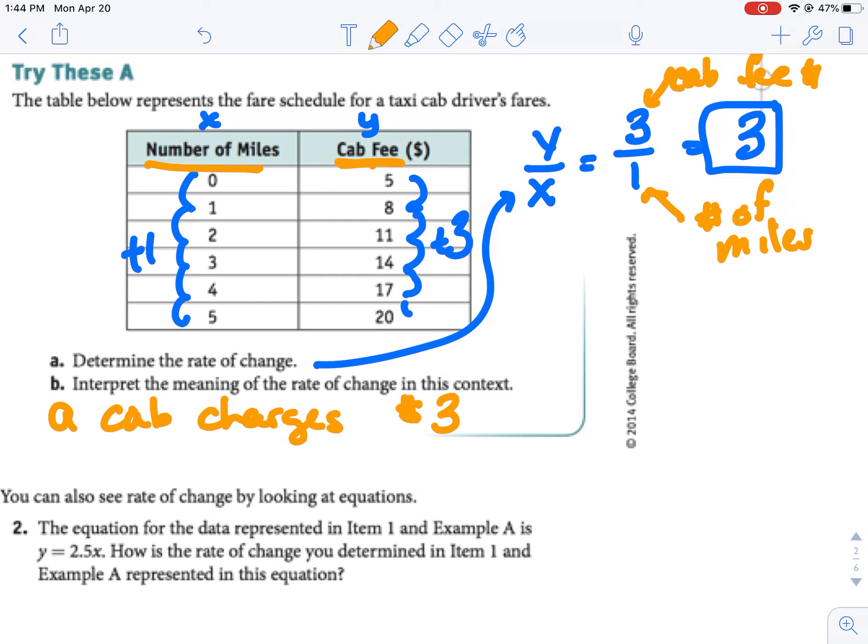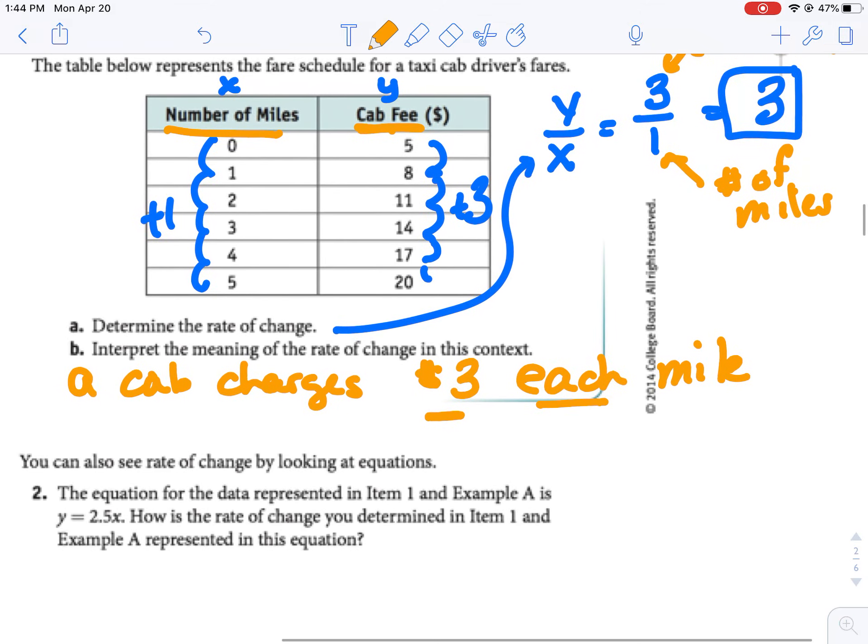Okay, so we could say something like a cab charges $3. Right, that's our fee. So our fee is $3. We could say each mile or for every mile or for one mile. It doesn't matter how specific you are. But it's basically saying the same thing. So it's $3 per mile or each mile.